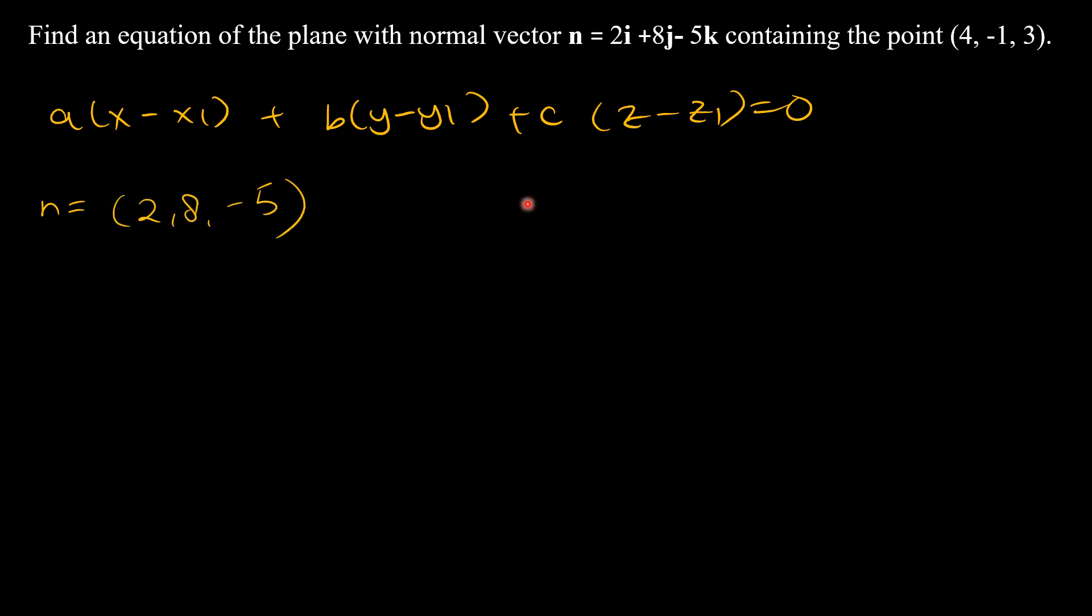So 2, 8, negative 5 for n. And what about the initial point? The initial point P1 is given as (4, -1, 3). So here the a, b, and c is n.